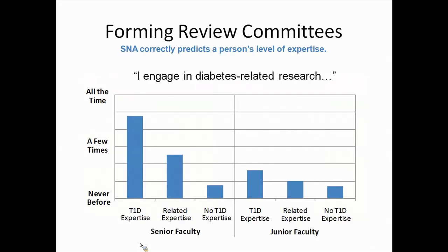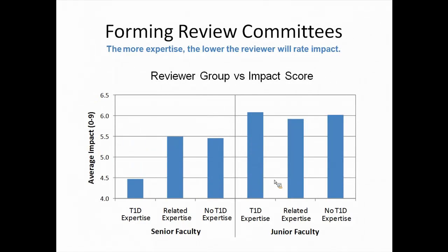We also had one team of senior faculty and one team of junior faculty, giving six groups overall. First we wanted to validate that our computational way of getting at expertise was valid — so we asked reviewers in each group of about 30 people to rank how much research they do related to diabetes. The people we thought were type 1 diabetes experts ranked themselves high; those we thought were related put themselves in the middle; those we thought had no expertise said they had no expertise; and senior faculty said they did more research than junior faculty. So using network properties, we were able to identify people who self-reported the expertise level we expected.